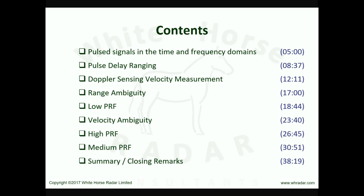All three waveforms — low, high, and medium PRF — have relative strengths and weaknesses, and all three have applications in pulsed Doppler radar. We start by considering the waveform and spectrum of a pulsed radar signal.